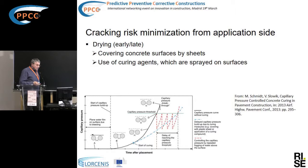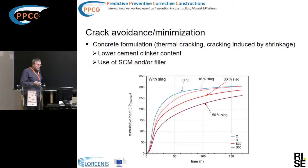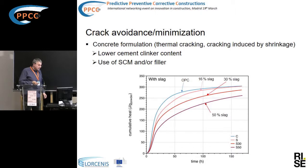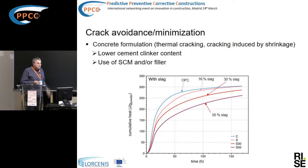From the compositional side of the concrete — as mentioned regarding slag — you can lower the cement clinker content, add a type 1 inert filler, use an SCM, or use a composite cement. You can quite drastically reduce the heat of hydration by reducing the clinker content of the binder.